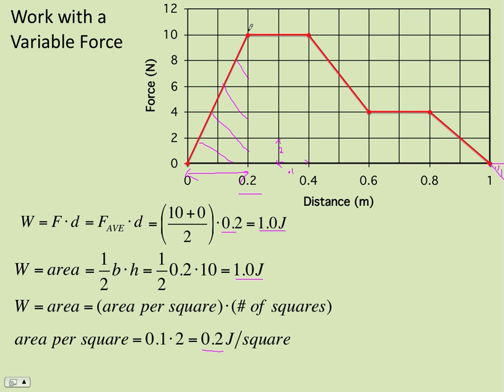And so 0.1 times 2 gives me 0.2 joules for every square. How many squares are under the line here? Well, you've got 1, 2, 3, 4, 5, 6, 7, 8, 9, 10, cut in half. So you have 5 squares times 0.2 joules per square. And we get 1 joule of energy.